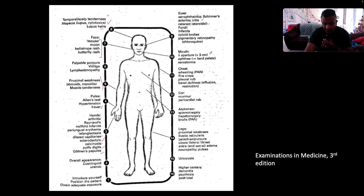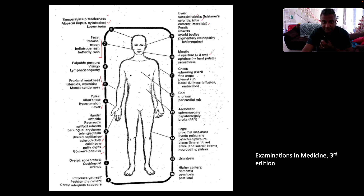Looking at the mouth, we already spoke about microstomia, which is the diminished aperture — less than 3 centimeters by definition. Look for aphthous ulcers, especially on the hard palate, and xerostomia.